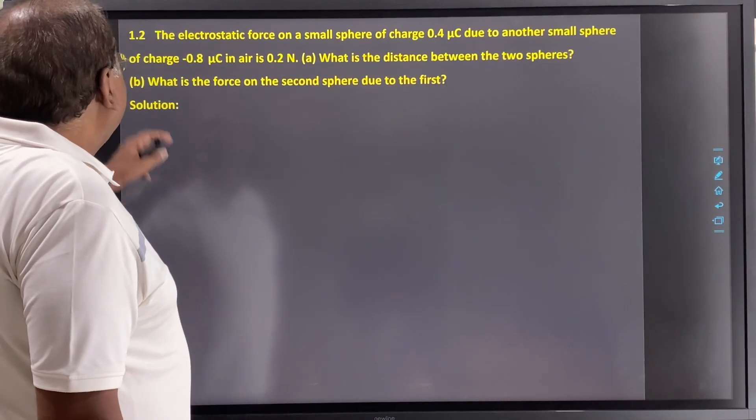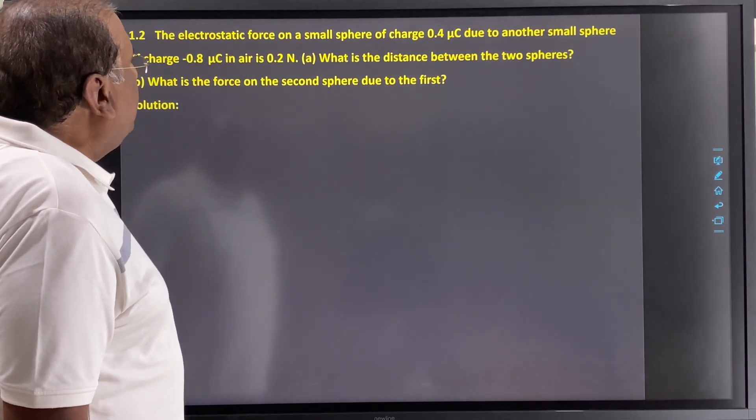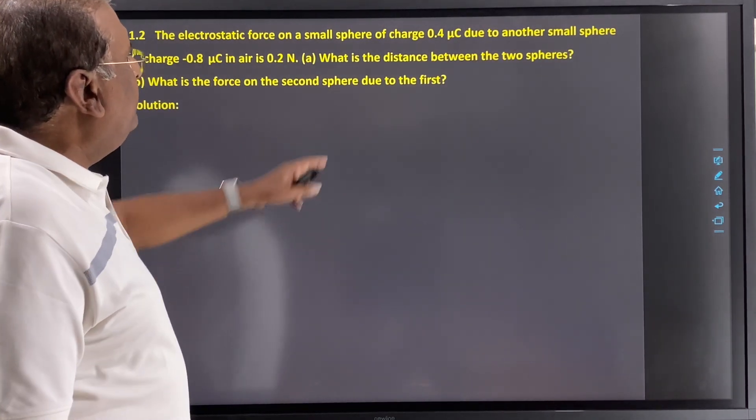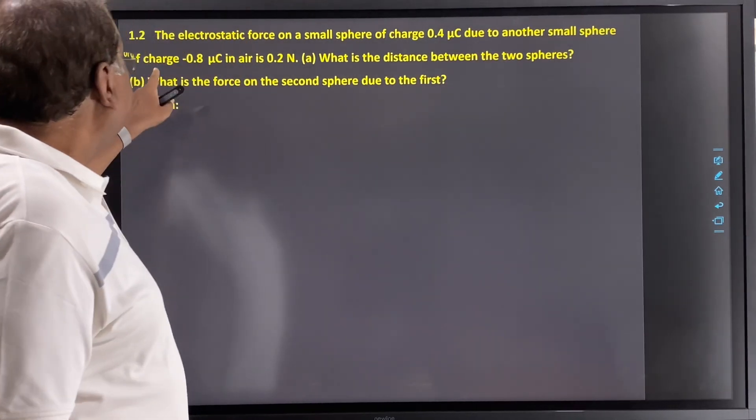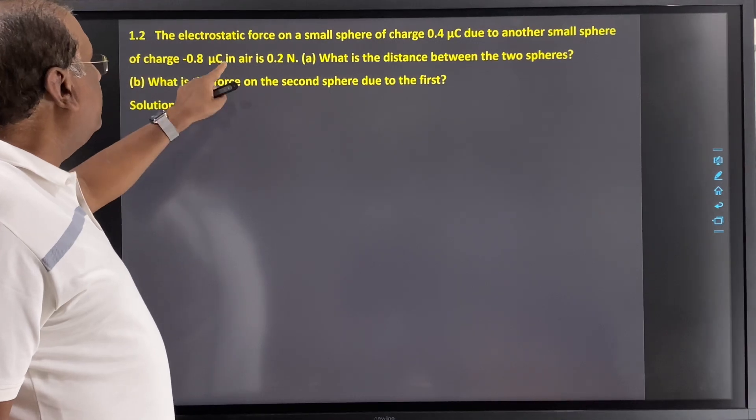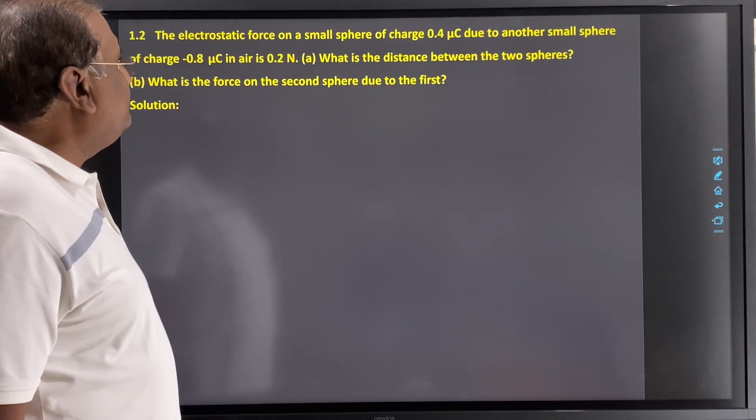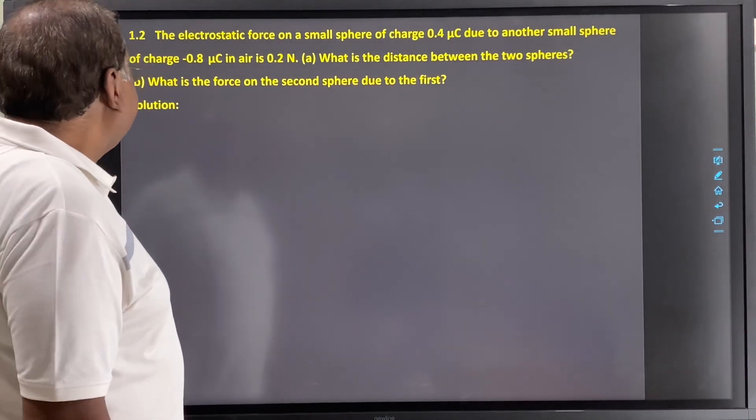Now, problem 1.2. The electrostatic force on a small sphere of charge 0.4 micro coulomb due to another small sphere of charge minus 0.8 micro coulomb in air is 0.2 newton. Part A: What is the distance between the two spheres?